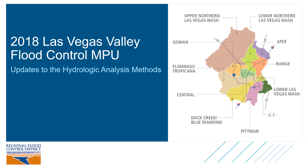Here on the screen we are looking at the study area for the Las Vegas Valley MPU. The study area is divided into 11 watersheds, which helps us organize the hydrologic analysis as well as the implementation of the overall flood control plan.